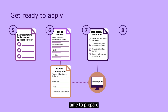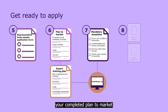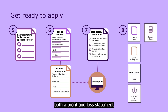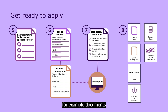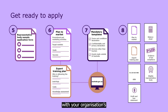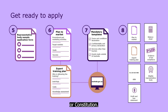Finally, it's time to prepare all the documents that confirm your eligibility. Gather together your completed plan to market and/or your export training plan. You'll need your ABN, both a profit and loss statement and balance sheet from the past two financial years, evidence of your tax compliance — for example, documents like a business activity statement or notice of assessment — and proof that you're an eligible representative body, with your organisation's memorandum of incorporation, articles of association, or constitution.